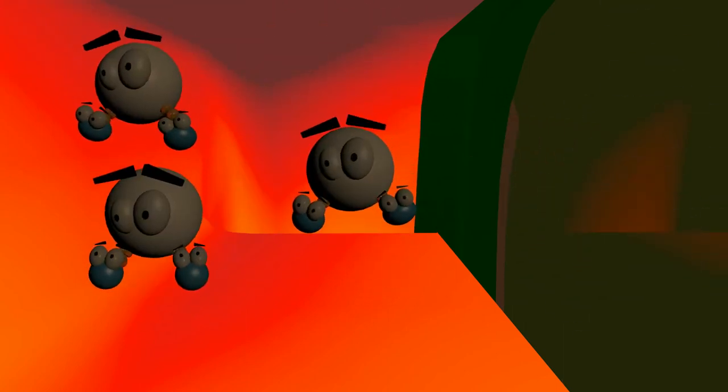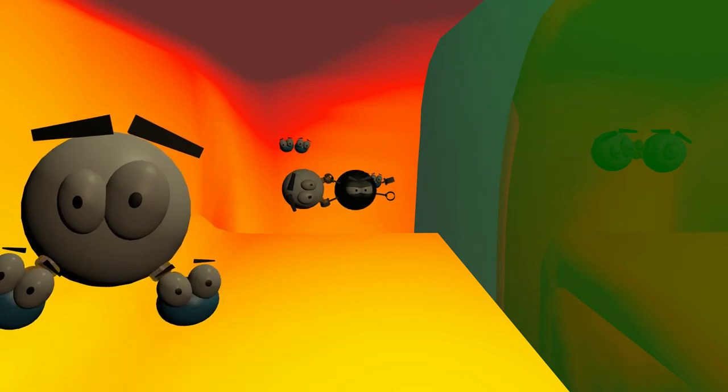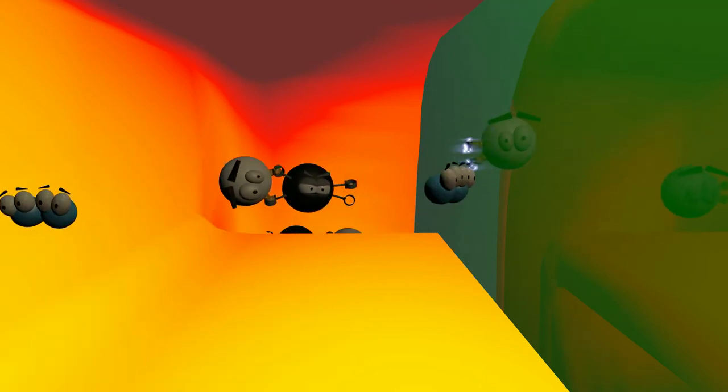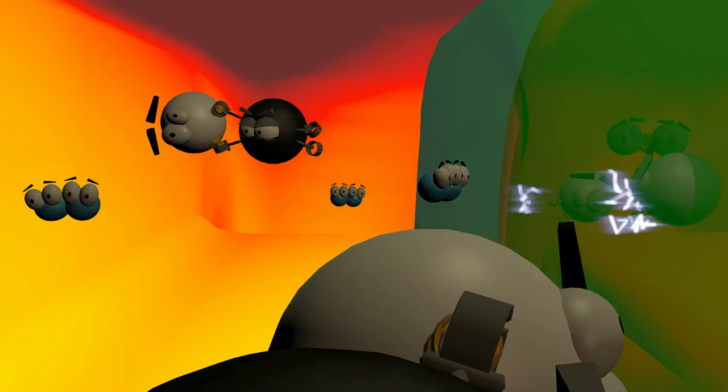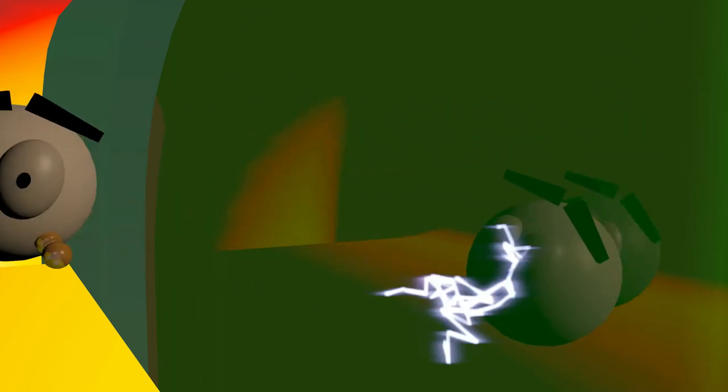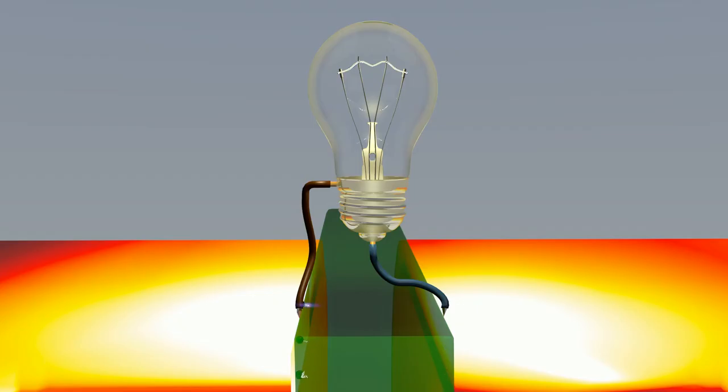When the oxygen ions arrive on the other side, they combine with their hydrogen buddies to water, or with carbon monoxide to carbon dioxide. During these chemical binding reactions, electrons are released.